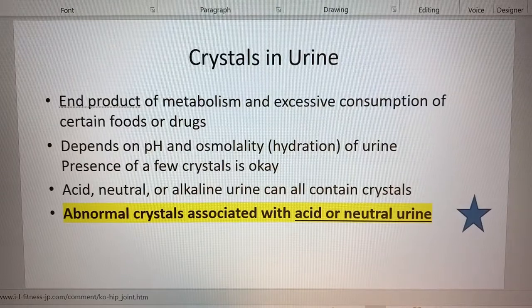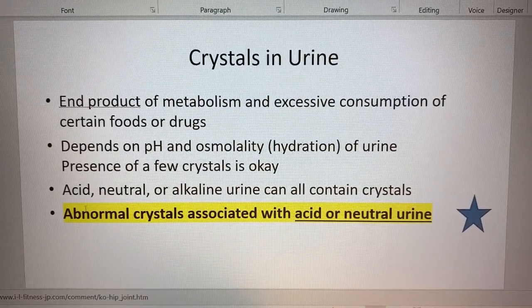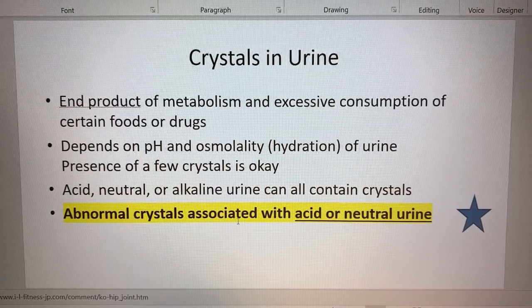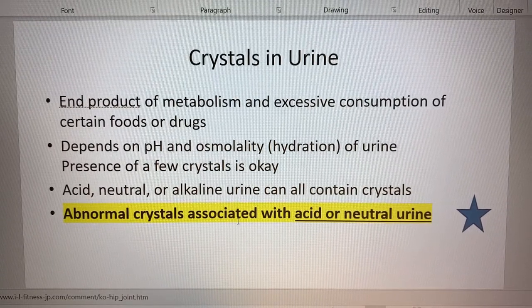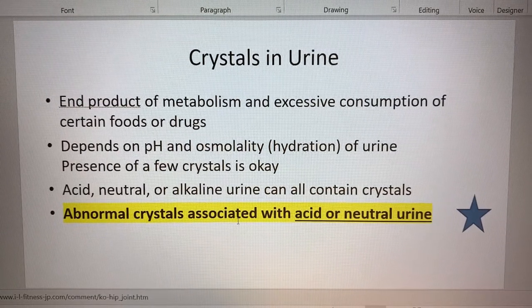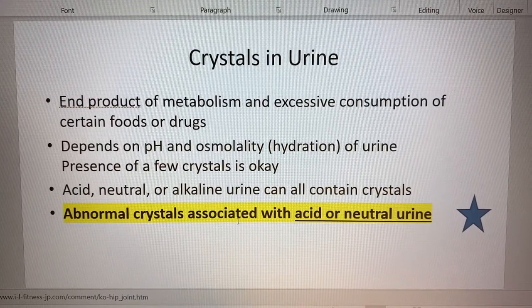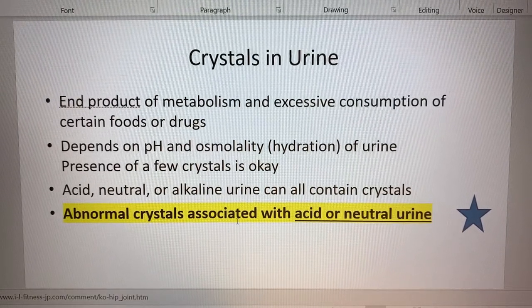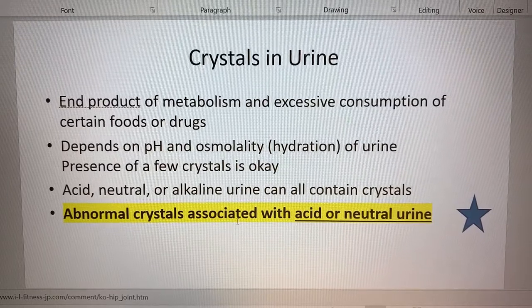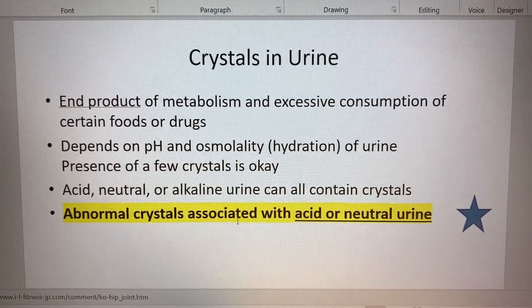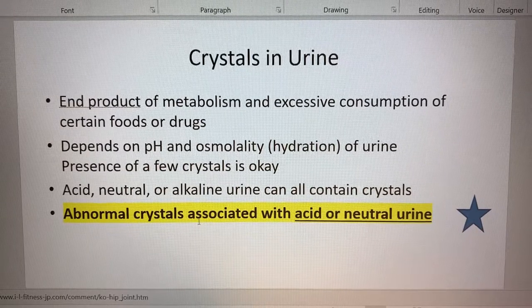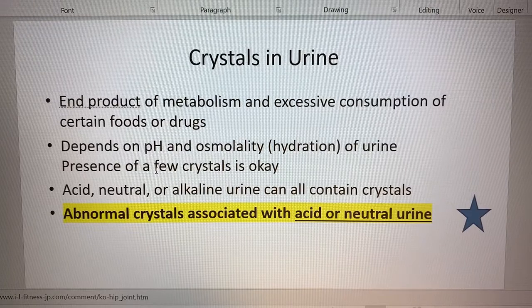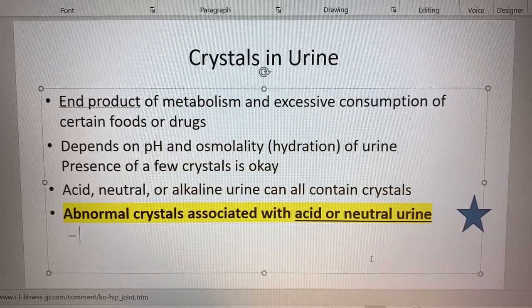Now let's look at crystals in the urine. Crystals can be the product of food that's been eaten with high purine content, or drugs that have been taken, and it could be the end product of cellular metabolism. It really depends on the pH and how hydrated that urine is - how hydrated the patient is - because the hydration is directly reflected in the volume of urine. A few crystals is okay, but a lot of crystals will form a renal calculus.